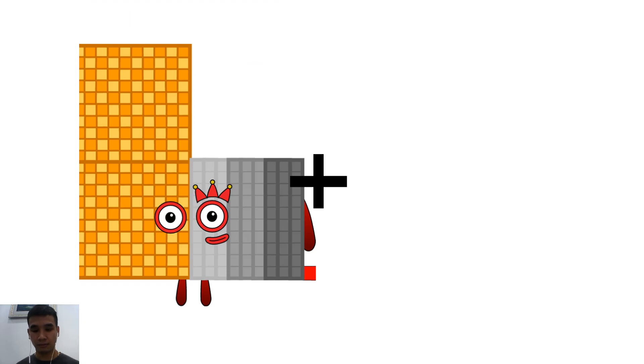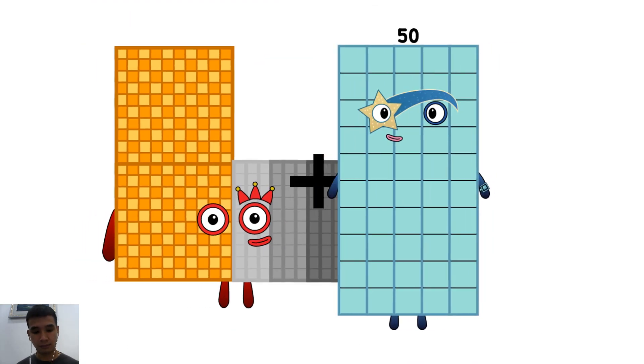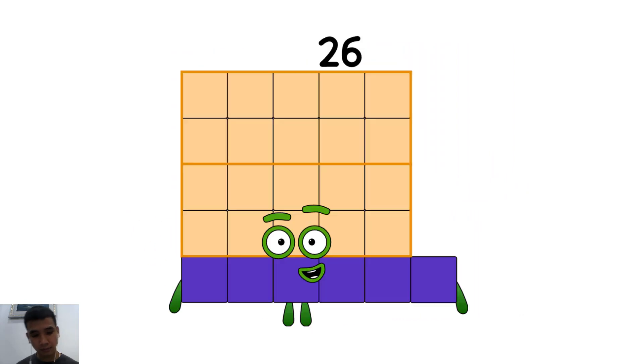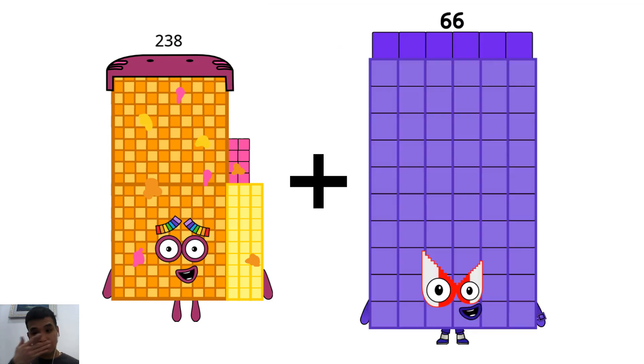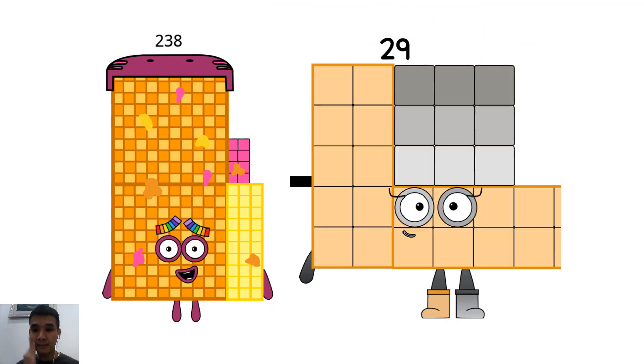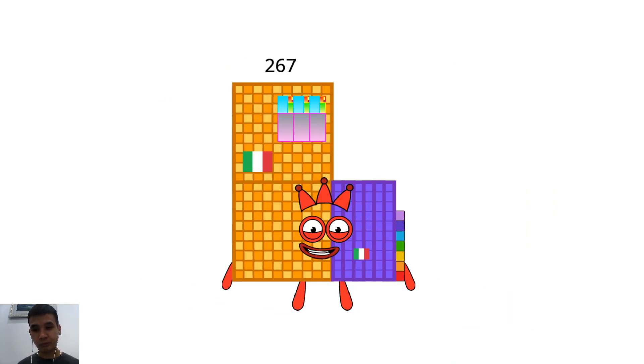291 plus 50 equals 26. 238 plus 29 equals 267.